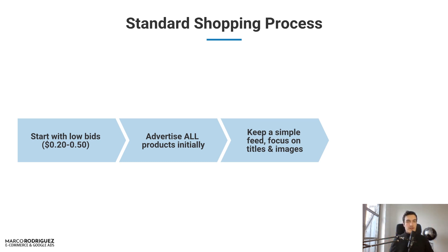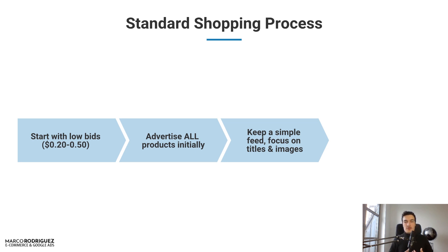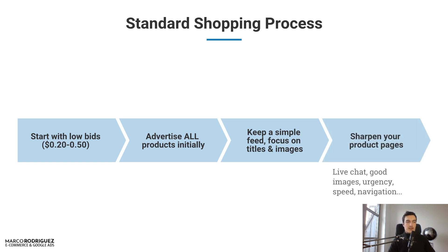In the beginning, keep a simple feed and focus on titles and images. Don't spend 20 minutes writing each description if you have 200 products. Focus on the title — include the most important keywords: color, material, product name, maybe multiple keywords describing the product. Also have a highly polished image that creates curiosity and looks good. Maybe use a white background, or an ambient image if everyone else uses white backgrounds and you want to stand out. You want a very good click-through rate for the right people.